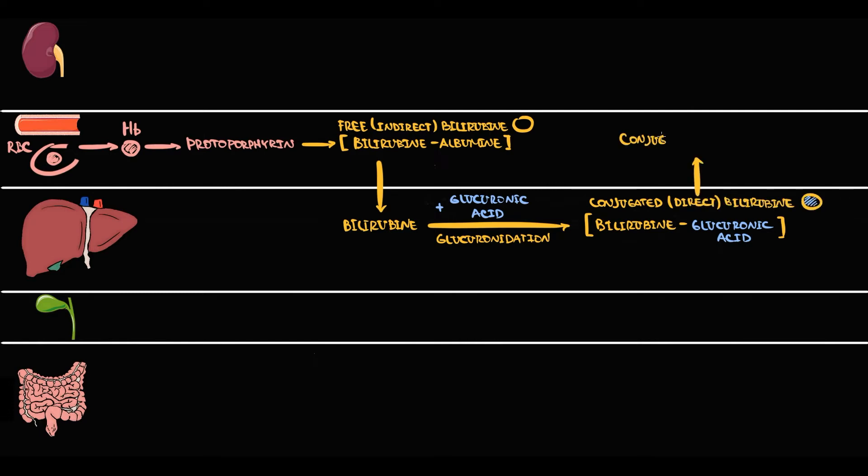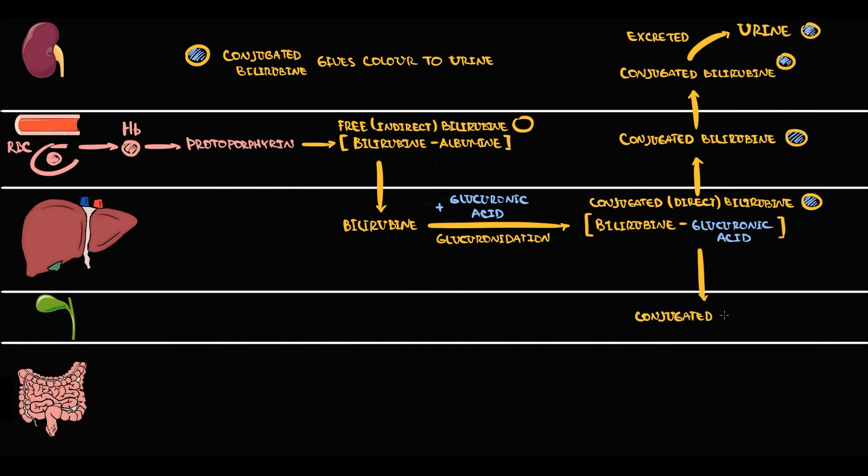Hepatocytes excrete a minor portion of conjugated bilirubin into the blood. Through the bloodstream, bilirubin is delivered to the kidneys, and kidneys excrete conjugated bilirubin into the urine. Conjugated bilirubin gives color to the urine. Most of conjugated bilirubin, hepatocytes excrete into the bile. With bile, conjugated bilirubin is delivered to the duodenum, and then the intestine excretes conjugated bilirubin with feces.